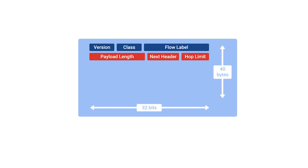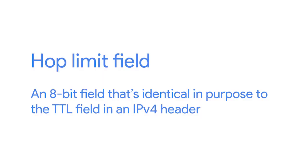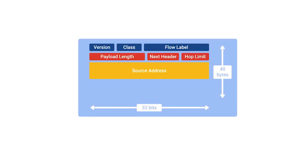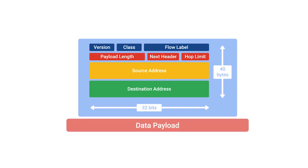Next, we have the hop limit field — an 8-bit field that's identical in purpose to the TTL field in an IPv4 header. Finally, we have the source and destination address fields, which are each 128 bits. If the next header field specified another header, it would follow at this point. If not, a data payload the same length as specified in the payload length field would follow.